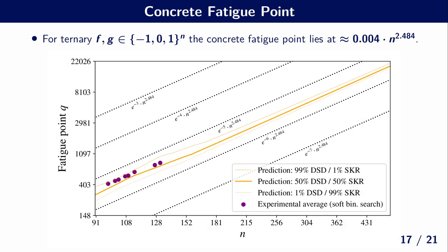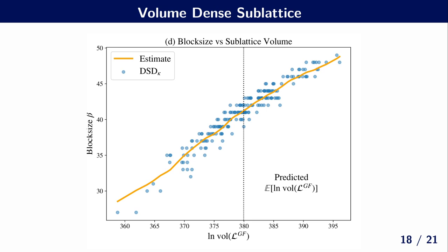Given that we now understand the under-stretched and over-stretched regimes, we can also easily make predictions for the fatigue point. For ternary secrets F and G, the concrete fatigue point seems to lie at around 0.004 times N^{2.484}. This fully explains why the fatigue point already lies very low in our experiments. However, because the exponent is still rather large, the fatigue point lies much higher than the NIST parameters being used, so all schemes currently in use lie in the under-stretched regime. In the over-stretched regime, the security really depends on the volume of the dense sub-lattice, which can vary a lot for a random ternary key — the required block size can vary from slightly below 30 all the way up to 50.